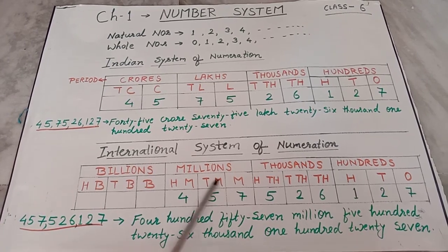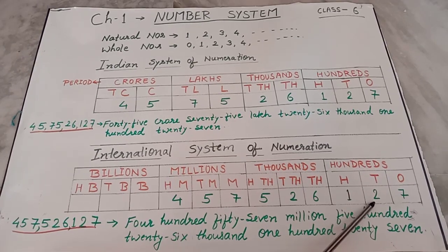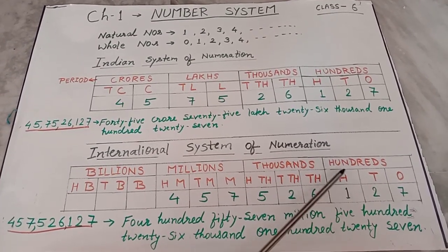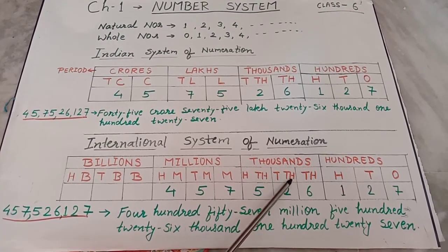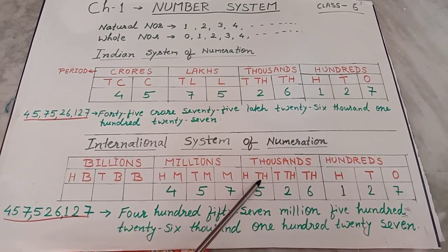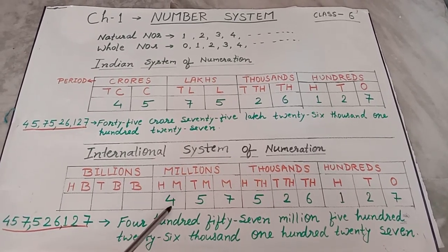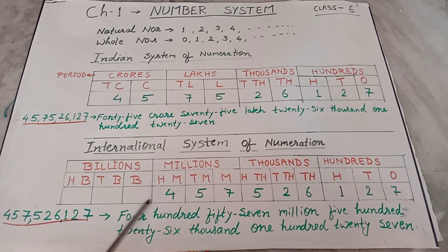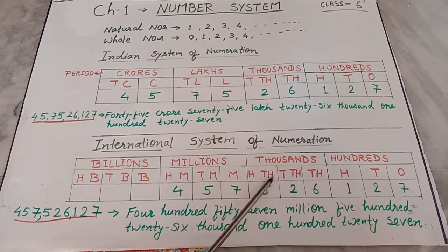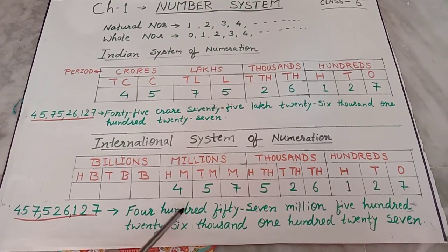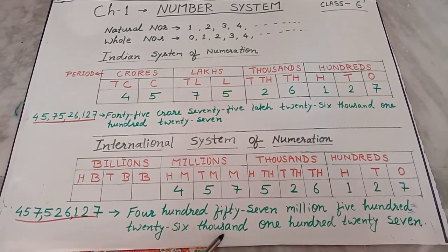In the international system, this number is placed as: 7 at the 1s place, 2 at the 10s place, 1 at the 100s place, 6 at the 1000s place, 2 at the 10,000s place, 5 at the 100,000s place, 7 at the millions place, and 4 at the 10 millions place. So this large number is written in the international system of numeration as 457,526,127.